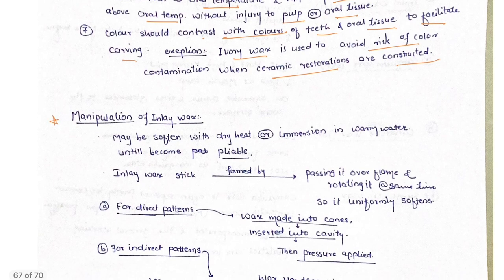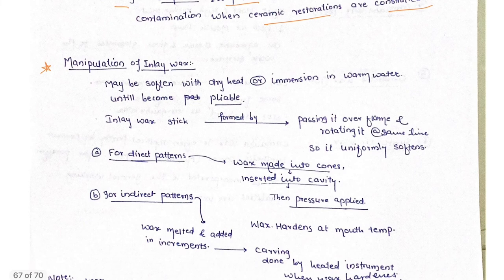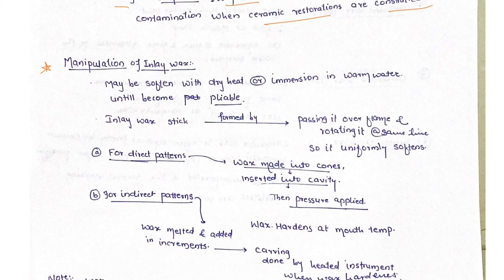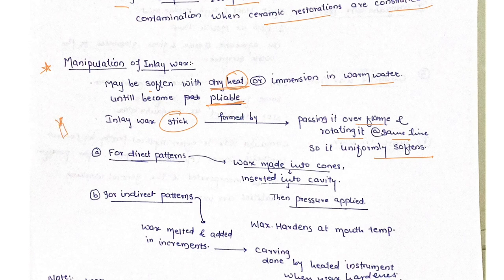Next is manipulation. Manipulation is also asked in questions. Softening may be done by dry heat or immersion into warm water until it becomes pliable, meaning soft. The inlay wax stick is formed by passing it over flame and rotating it at the same time so it becomes uniformly soft.